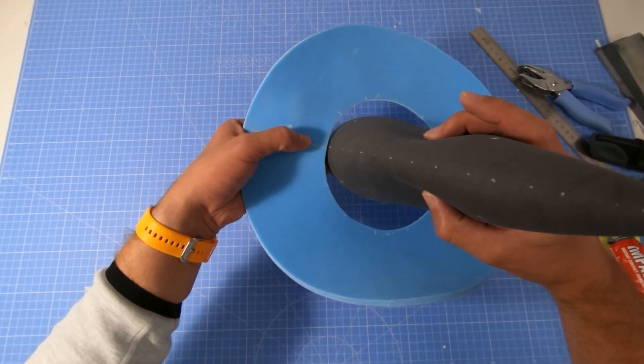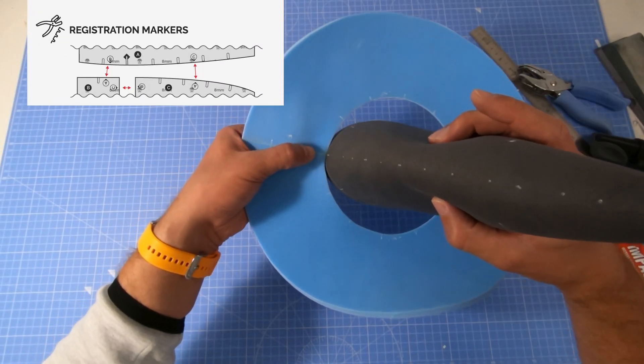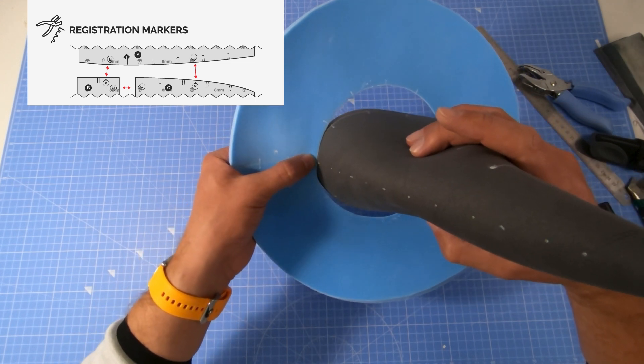Fitting the top cone to the brim can be a bit tricky, make sure the registration markers meet and take your time.